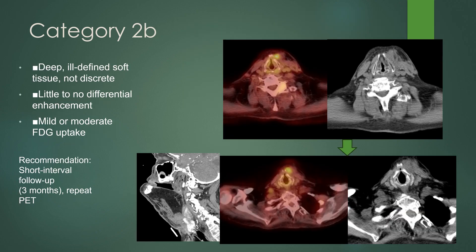Category 2B would be deep, ill-defined soft tissue — not a discrete mass — with little to no differential enhancement and mild or moderate FDG uptake. In this case, the patient post-surgery had a floor-of-mouth flap in place with extensive surgery in the neck. On PET, there's an area of abnormal uptake at the level of the thyroid cartilage superficial to it. On CT, you can see some soft tissue thickening but no mass-like enhancement, just some distortion of the architecture.